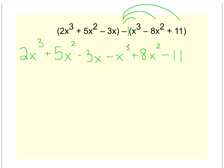Now that I've distributed that negative one, it's time to combine like terms. I've got a plus 2x³ and a minus x³. Remember, there's a one between the negative and the x. So 2x³ minus 1x³ is x³.